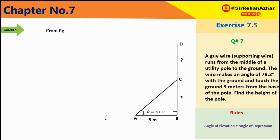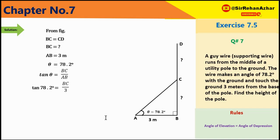Data: BC = CD (unknown), AB = 3 meter, theta = 78.2 degree। Triangle ABC में tangent of theta = BC/AB। Tan 78.2° = BC/3। BC = 3 × tan 78.2° = 3 × 4.7867 = 14.36 meter۔ یہ pole کی آدھی height ہے۔